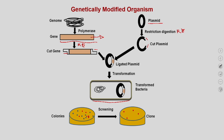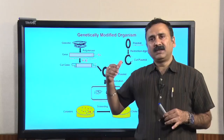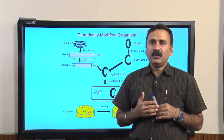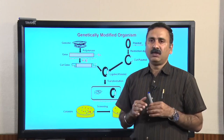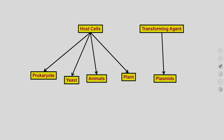By following this kind of schematic pathway and reactions, you can modify a particular organism and develop a new genetically modified organism. For this kind of protocol, you need two different objects: the host cell — which could be prokaryotes, yeast, animals, or plant species — and the transforming agents.